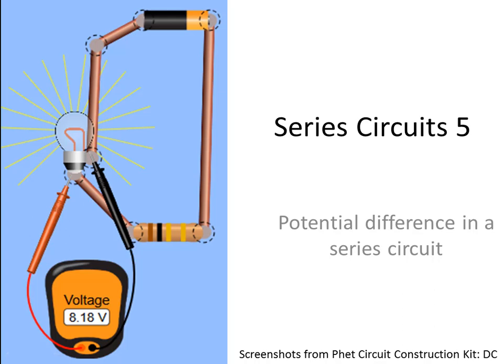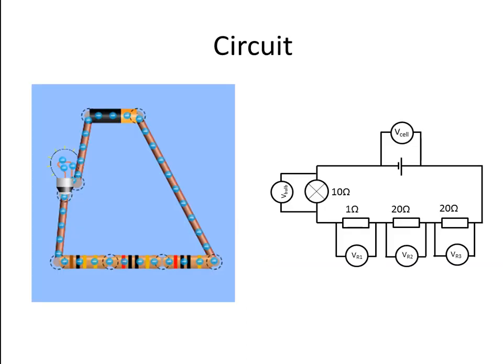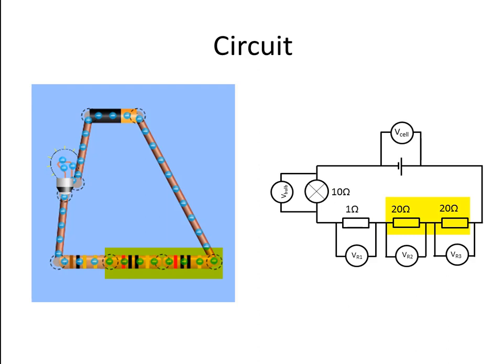Now we need to understand potential difference within a series circuit. We're going to start by looking at a single circuit and see how the resistance of various resistors affects the potential difference across each resistor. The circuit will have a 9 volt battery connected in series to the following components: a bulb with a resistance of 10 ohms, a 1 ohm resistor, and two 20 ohm resistors.